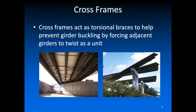So what are cross frames? Have you been under a steel bridge lately? When you look up, you'll see these braces that connect the girders together — these are what we call cross frames. Cross frames in steel bridges act as torsional braces to help prevent girder buckling by forcing adjacent girders to twist as a unit. Linking girders together using cross frames or struts increases the total buckling capacity of the system by forcing all the beams to twist as one unit.